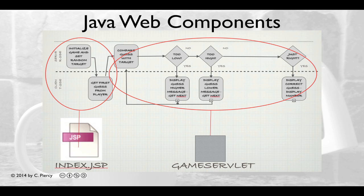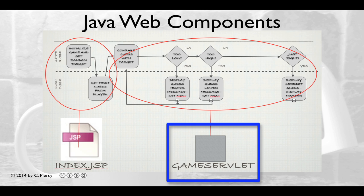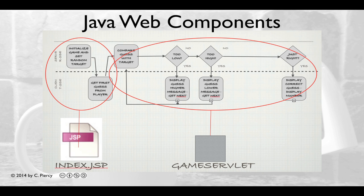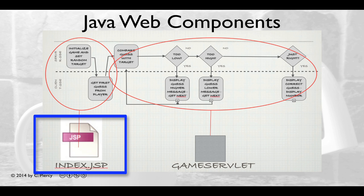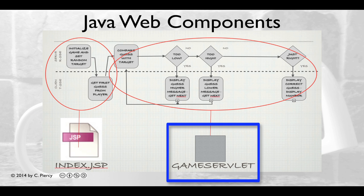So what do we need to build to accomplish this? In this version, where we're going to use a servlet as both the view and the controller, we're going to create a servlet component called GameServlet that will take care of everything after the first guess. To initialize the game and set the random target and get the first guess, we'll make that the concern of our initial index.jsp page. So after the first guess is submitted, the GameServlet will take over to perform all the comparisons with the target. It will have logic that will decide whether the guess is too low, too high, or just right, and then the logic will determine which of the appropriate views should be sent back to the client.